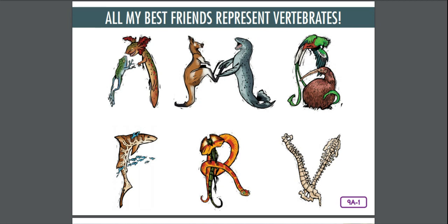So if somebody says, what's our unit about, you should say it's about the classification of animals. Classification means grouping of different animals. We have grouped animals by cold-blooded and warm-blooded, vertebrate or invertebrate, and we have learned about five vertebrate groups of animals.